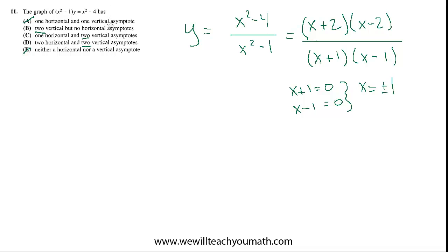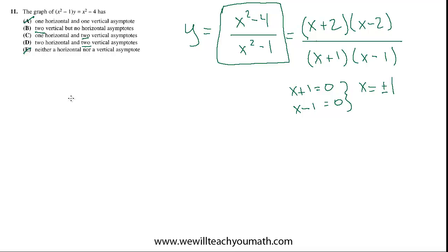Now we're interested in horizontal asymptotes. We don't need it in factored form — we can look at the original expression. A horizontal asymptote is what the graph trends toward as x approaches infinity or negative infinity. Even without calculus, we can examine the end behavior of the function and ask: what's going to happen as x gets really large approaching infinity, and what happens as x approaches negative infinity?